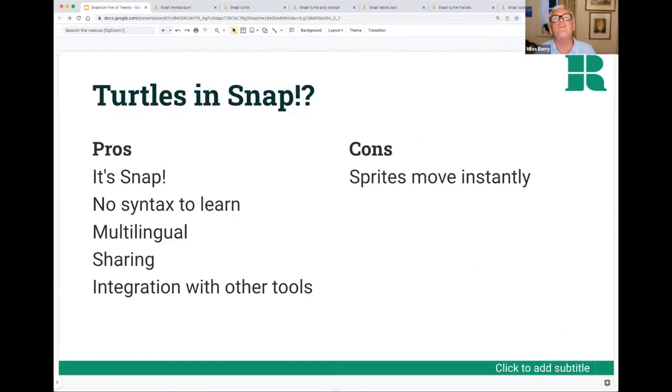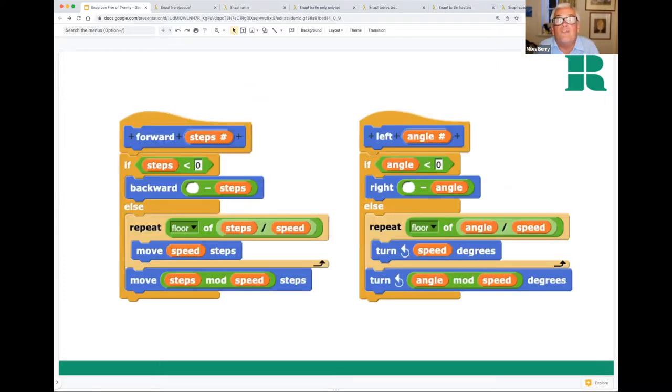What does this look like in Snap? There are lots of advantages to doing turtle graphics in Snap rather than good old fashioned Logo. Firstly, it's Snap. There's no syntax to learn. It's obvious what a block does. You can find the blocks that you're looking for. You've got the language packs available. But there's just one thing which Snap isn't brilliant at when it comes to turtle graphics, which is that the sprites teleport to where they end up. There's no sense of it moving.